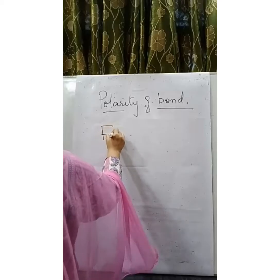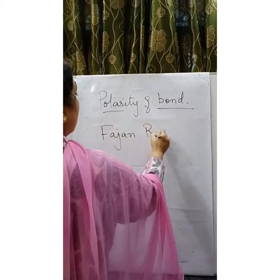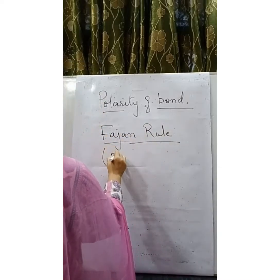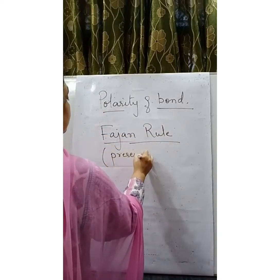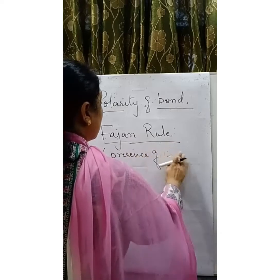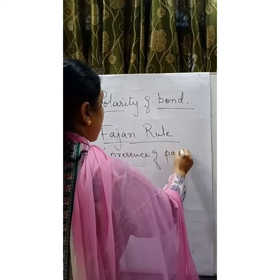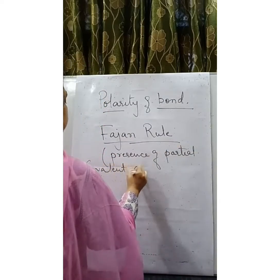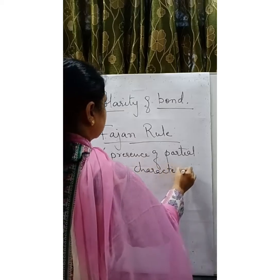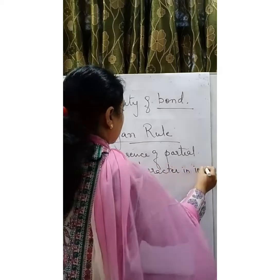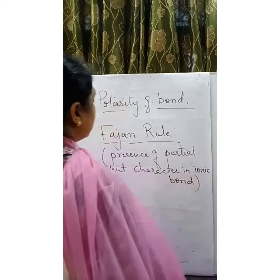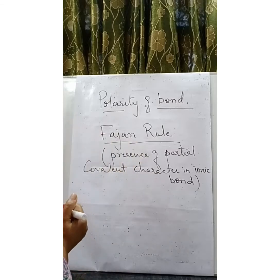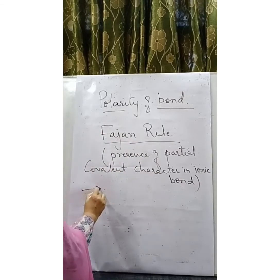Scientist Fajan came up with a rule known as Fajan's Rule to show the presence of partial covalent character in ionic bond. According to Fajan, he gave rules to show the presence of partial covalent character in ionic bond.